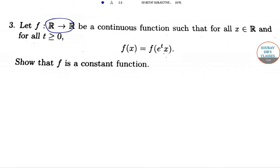let f: ℝ → ℝ be a continuous function such that for all x ∈ ℝ and for all t ≥ 0, f(x) = f(e^t x). Show that f is a constant function.